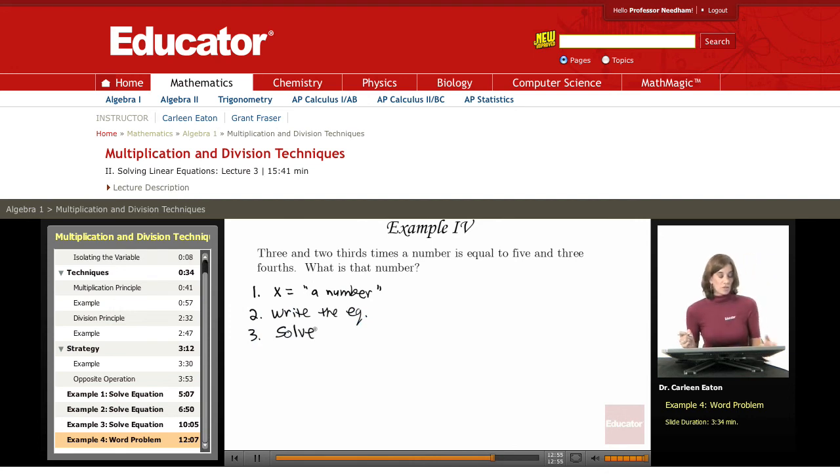Okay, so three and two-thirds times a number is equal to. It tells me right here that this left side of the sentence is equal to the right side of the sentence. Now that I've found my equal sign, I'm going to start with the left side of the equation.